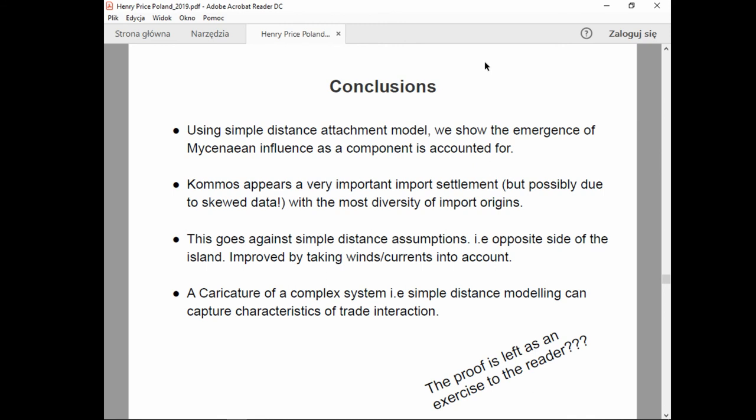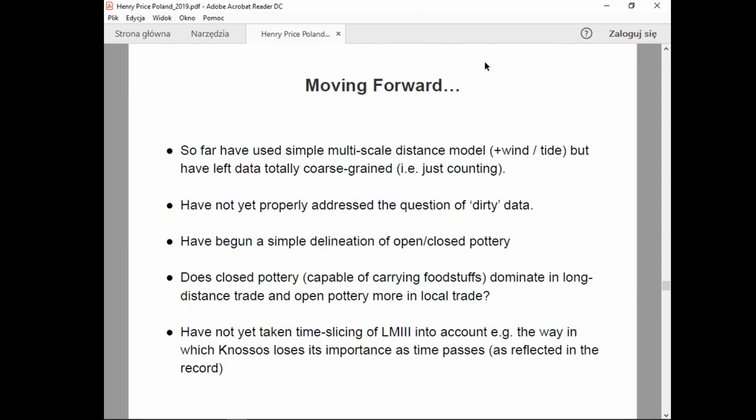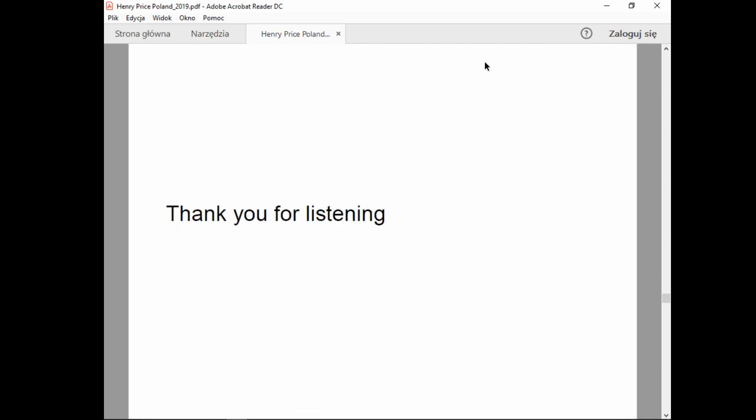So in conclusion, you say this is a simple distance attachment protocol. We show the emergence of a Mycenaean influence, as it were. And this component is going to get accounted for. You've got Knossos appears to be very important, possibly due to some sort of skewed data. You can't always throw that out. And it also has a really supremely diverse range of imports. This goes against some distance assumptions. So we kind of maybe make up for those with the archaeologists. And then the caricature of a complex system, simple distance modeling can capture the characteristics of trade interaction. As I said, moving forward, it's just a matter of doing this on the smaller scale, bigger scales. And we've also begun looking at whether open and closed pottery kind of travels differently. Whether, you know, a closed vessel is something for travel and open vessels are for, I don't know, ritualistic. Paula taught me some things. And then again, spending the time slices would be awesome. So I'll see you again. But thank you for listening.